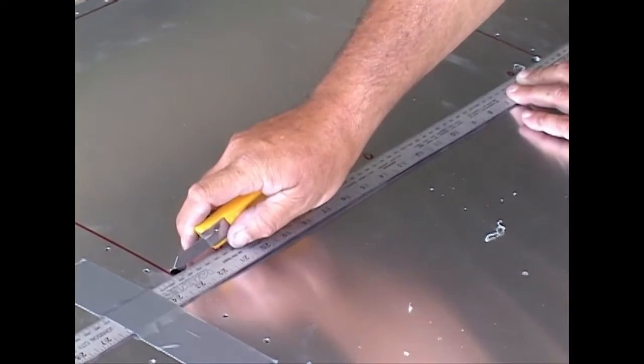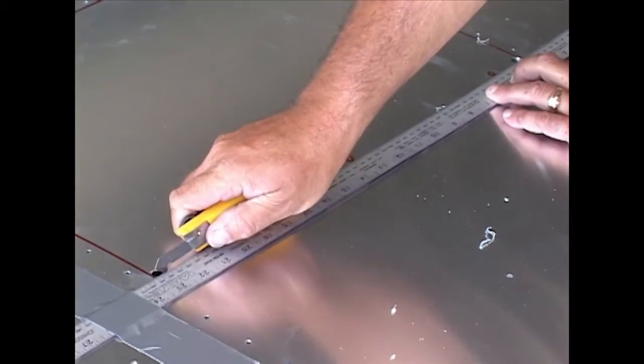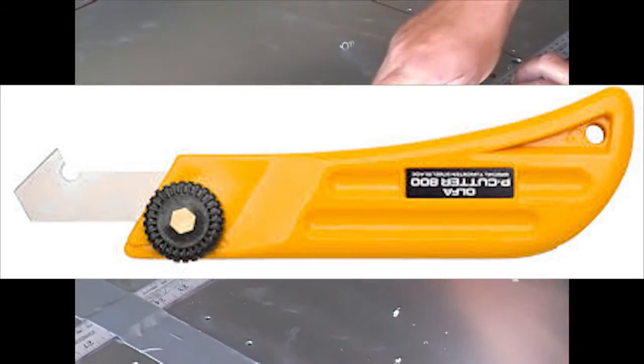Depending on how hard you press, anywhere from 10 to 20 scores with this knife will cut through the metal skin.